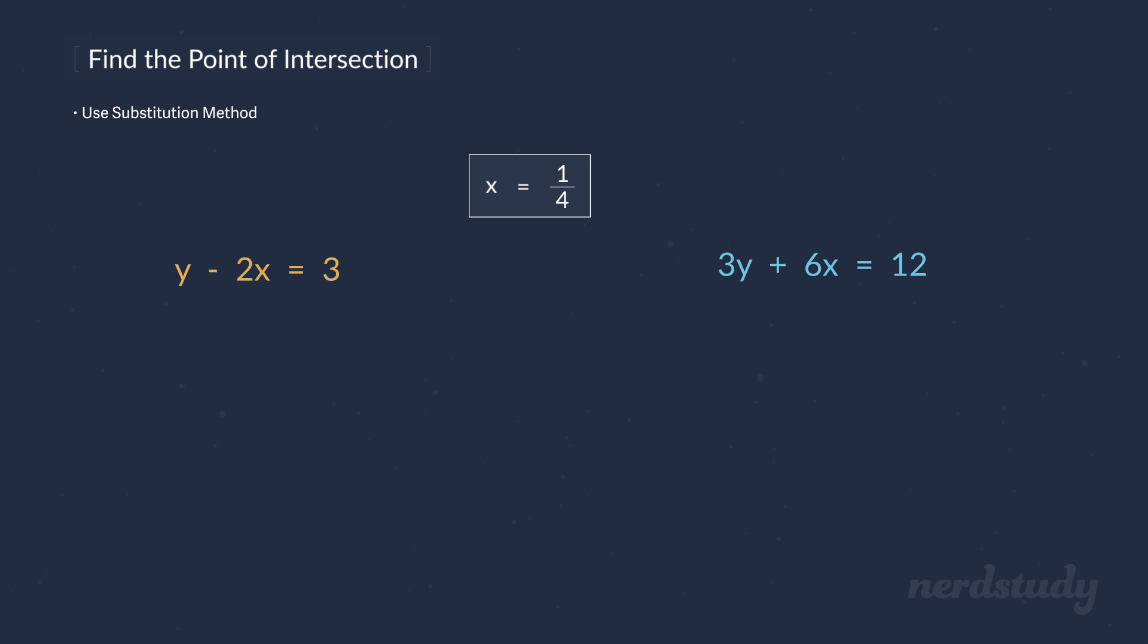Substitute 1 over 4 into the x's of each equation and we get the following. The first one simplifies down to y minus 1 over 2 equals 3. If we add each side with 1 over 2, we get y equals 3 plus 1 over 2, resulting in y equals 3 and a half.